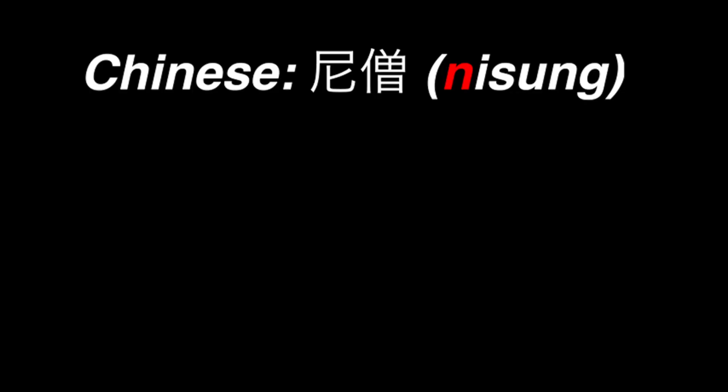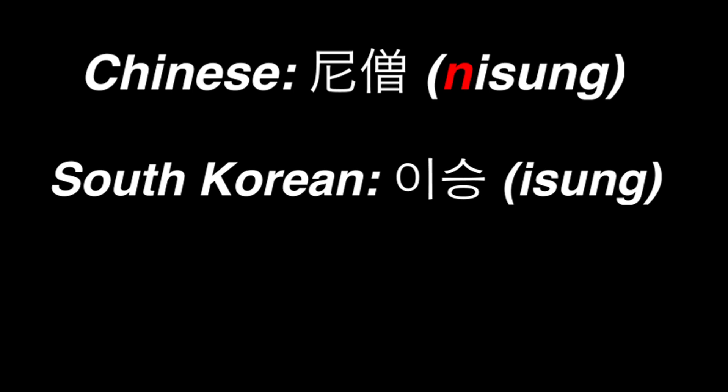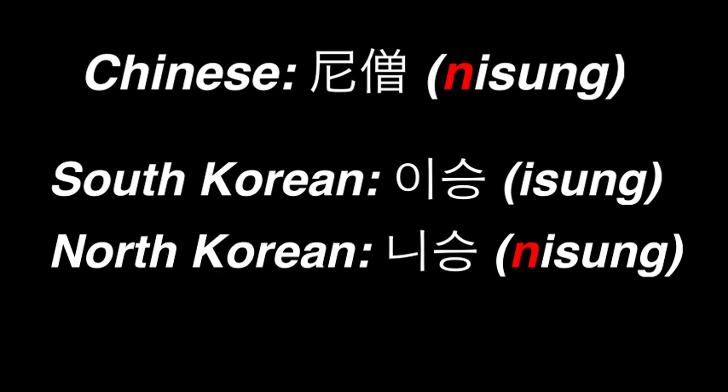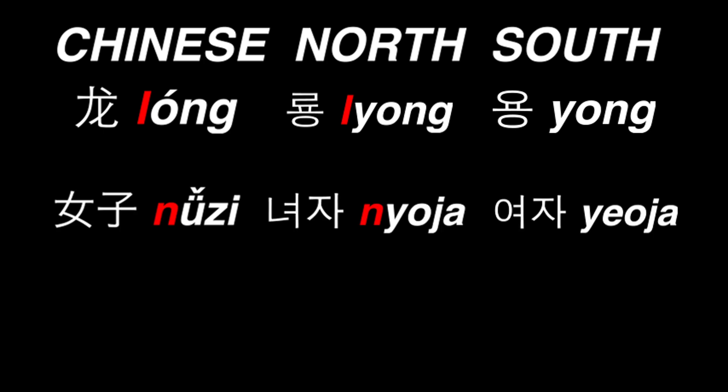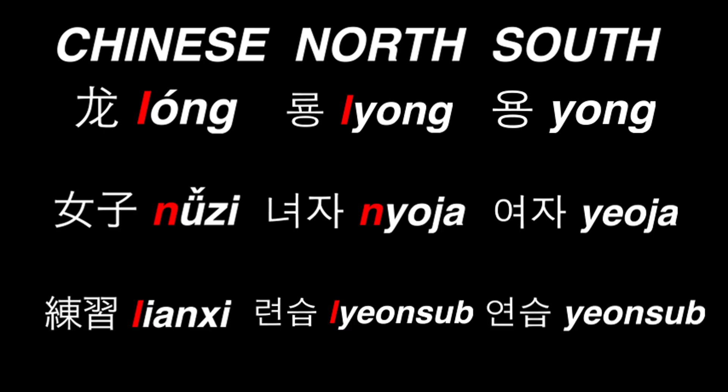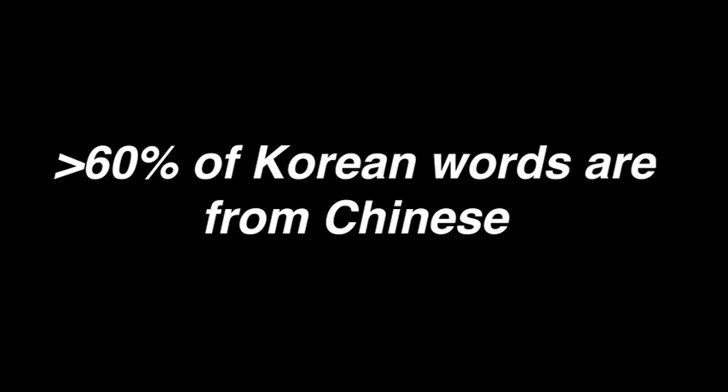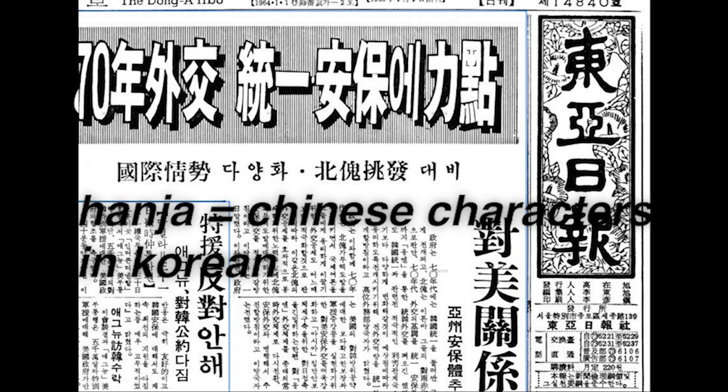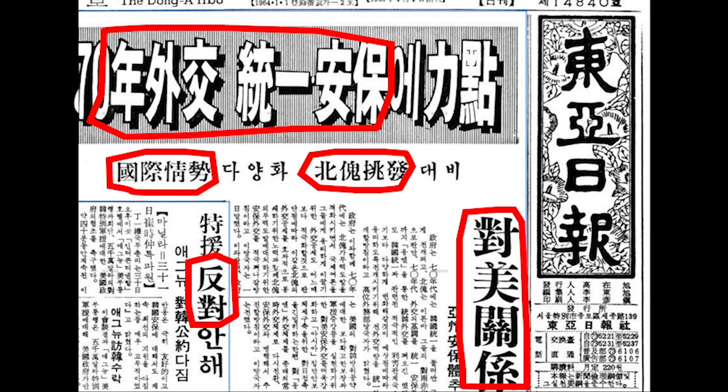Apart from that, Korean has a lot of words from Chinese, but the South and North borrow these words differently. If a Chinese word began with N or R, the South would drop it, but the North would retain it. In other words, it would lead to differences like 'yong' vs. 'lyong,' 'yeoja' vs. 'nyeoja,' and 'yeonseup' vs. 'lyeonseup.' Because Korean has borrowed so many words from Chinese, Korean now has hanja, and they're sometimes seen in texts like newspapers, although most just use Hangul.